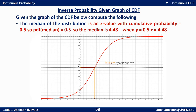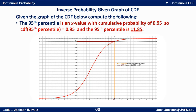Next, the 95th percentile. The 95th percentile is an x value with a cumulative probability of 0.95. Draw a horizontal line at y equals 0.95, find the corresponding place where it crosses the CDF graph, pull down to find x, and it's about 11.85.